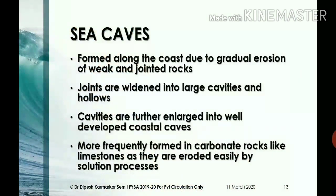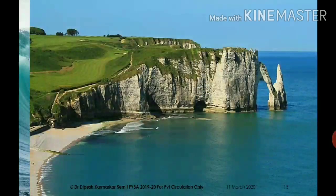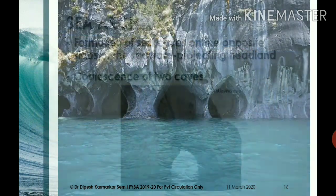The next landform is sea caves. Sea caves are formed along the coast due to gradual erosion of weak and strongly jointed rocks by uprushing breaker waves. As waves strike the rocks, the joints are widened into large cavities and hollows. As you can see in this slide, sea caves form along lines of weakness. The cavities are further enlarged by gradual wave erosion into well-developed caves. Sea caves are more frequently formed in carbonate rocks because they are eroded very easily by the process of solution.